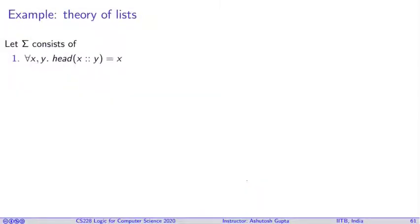So let's write down the sentences we believe are true about this theory. If I construct a list using list constructor and try to pick a head, then it should give me the first argument. Similarly, if we apply tail on a constructed list, I should get the second argument of the construction.